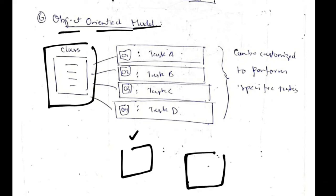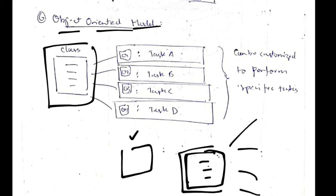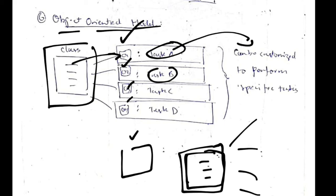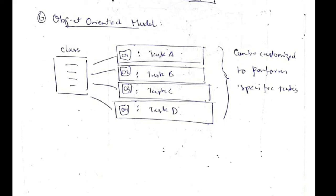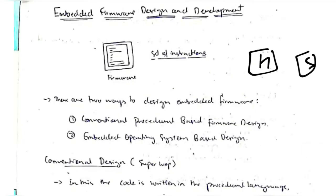The sixth is the object-oriented model. Here, you design one blueprint (a class) for a solution and create different objects from it. You can inherit the main properties and customize each object according to the environment. This is achieved using the object-oriented model.